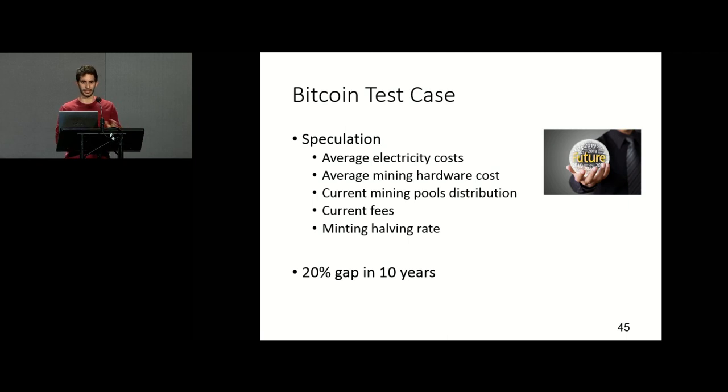We also included a Bitcoin test case in this work. It's just a speculation. Please don't come back and say you were wrong. We assume that all the parameters stay as they are today, but just taking into account the halving of the reward, the halving of the minting reward which occurs every four years. We get that in about 10 years in Bitcoin, we will have an optimization of 20% gap. 20% of the work will be lost in a sense.